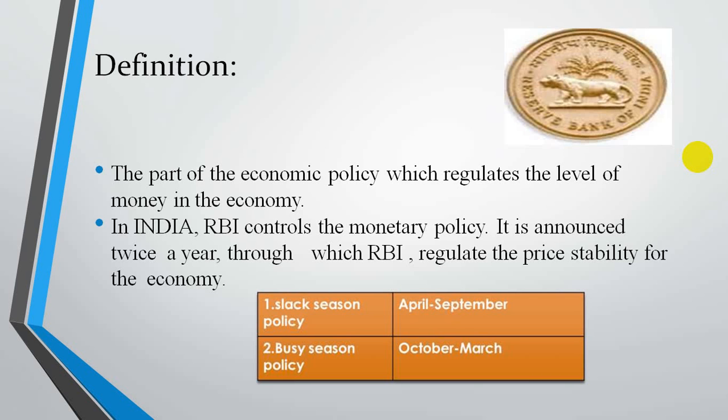RBI is a central bank and it looks into the amount of credit or the amount of money which will flow in the economy. RBI announces this monetary policy twice a year to maintain price stability — as a slack season policy from April to September, and a busy season policy from October to March.